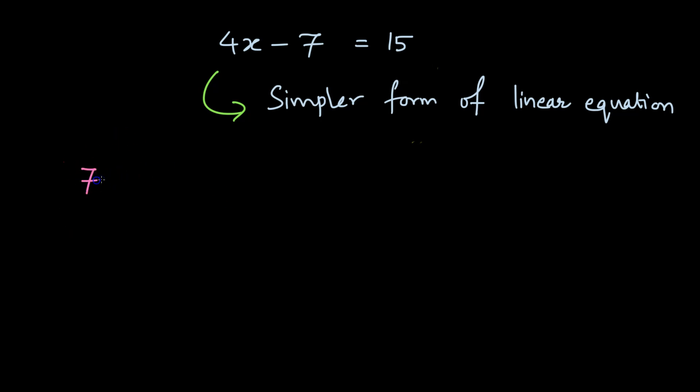Now what if we get an equation of this kind: 7x plus 3 divided by 2 plus 3 is equal to minus x plus 5 divided by 4.